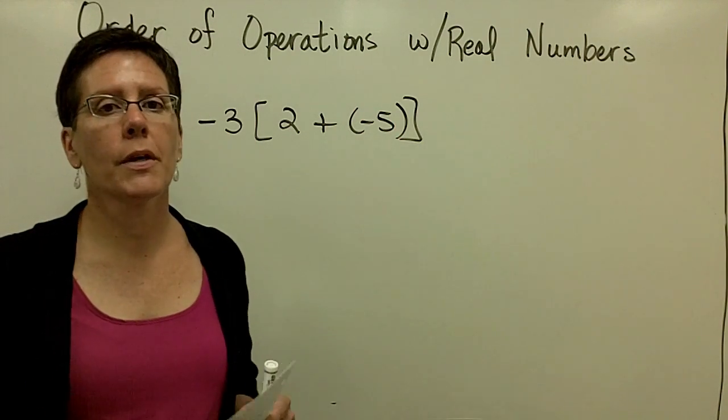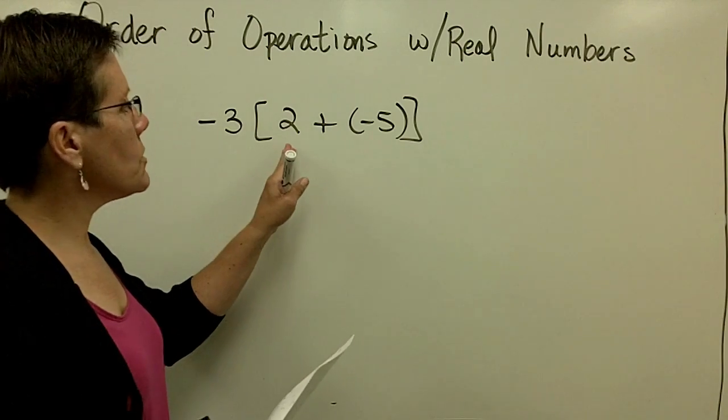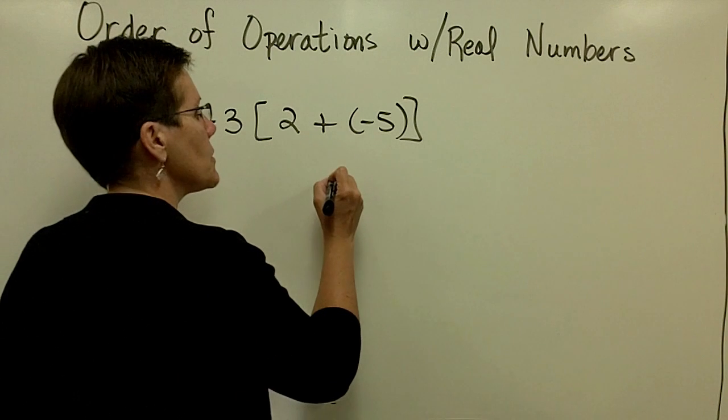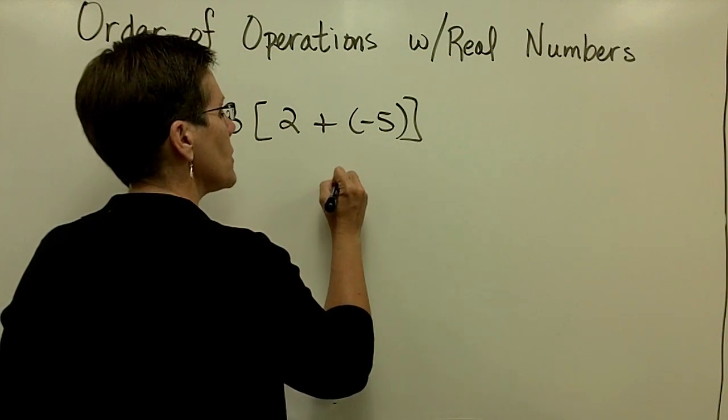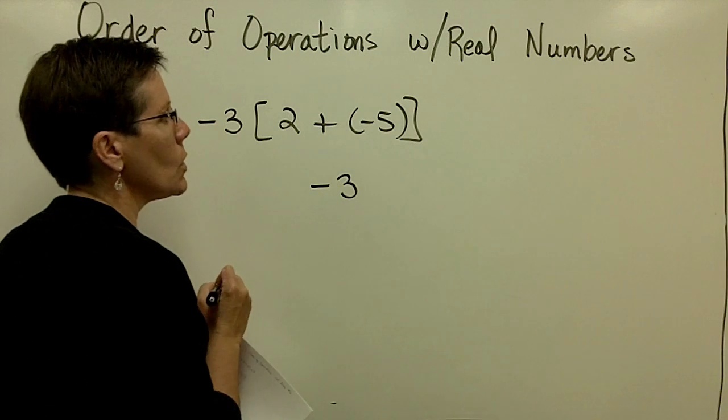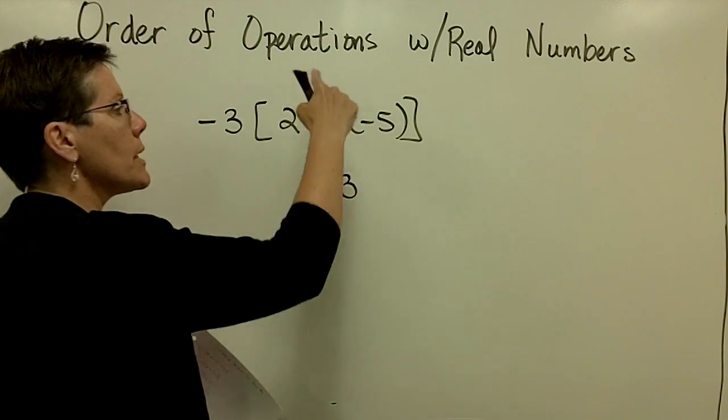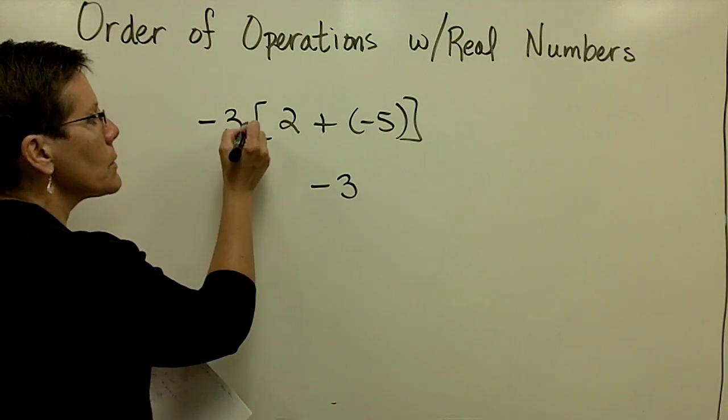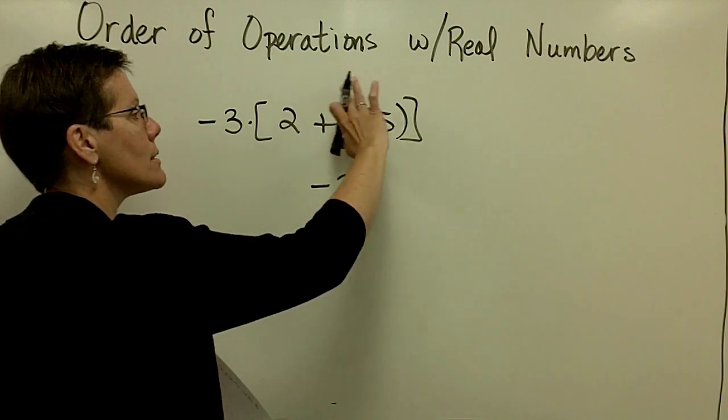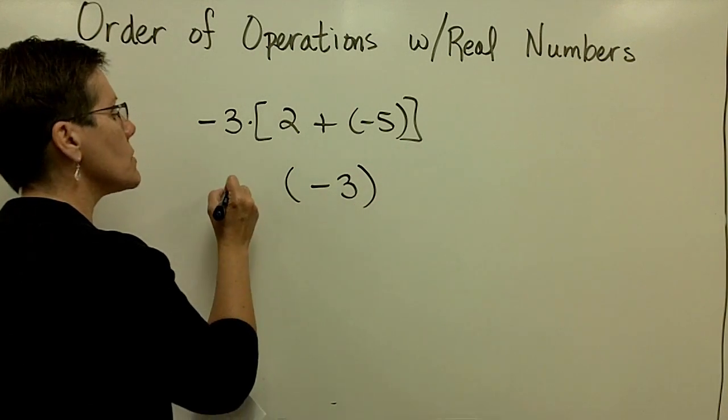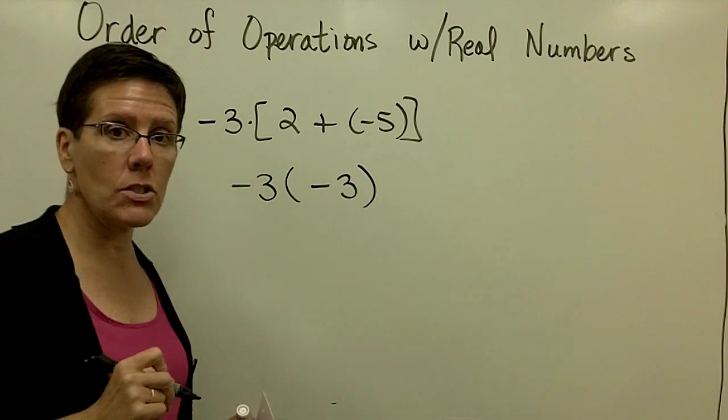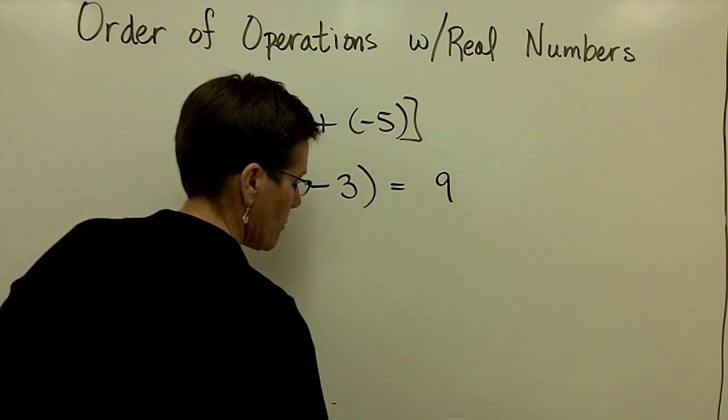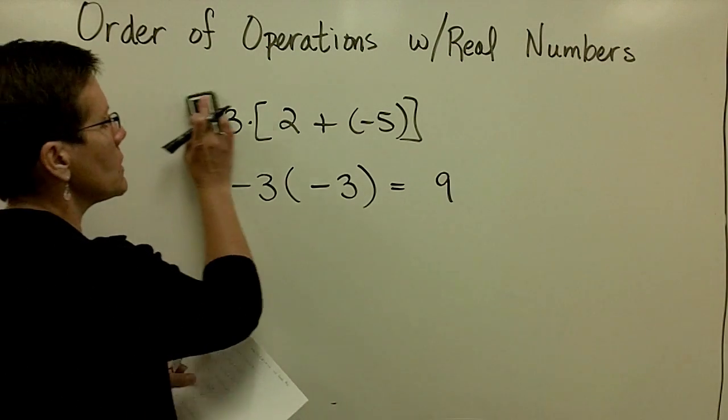Order of operations says to do what's in the parentheses first. So I'm going to take 2 and add a negative 5. They have unlike signs, so their difference, the difference in their absolute values is 3, and that one has more pull. So in this grouping symbol, 2 plus a negative 5 is equal to a negative 3. This reads a negative 3 times what's in that parentheses. So I'm going to go ahead and put parentheses around it so I can see that that's a multiplication problem. And now I have a negative times a negative is a positive. And I'm done.